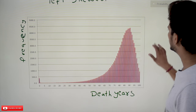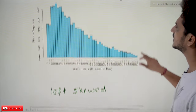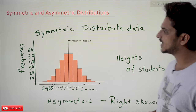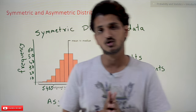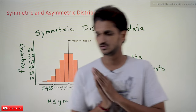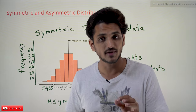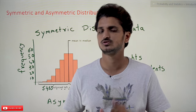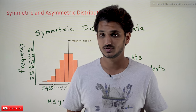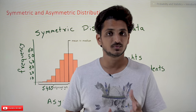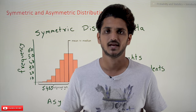These are the different types of symmetric and asymmetric distributions. Based on the distribution type, we apply the appropriate measure of central tendency. Hope you understand the concept. If you have any questions, please post them in the comment section below. Thanks for watching — if you haven't subscribed to our channel, please subscribe and press the bell icon for the latest updates.